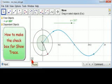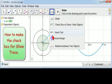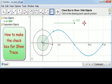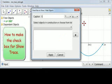Now let's see how to make that checkbox. What we want is a checkbox that turns the trace off and turns the trace back on. So we go to checkbox and we put a checkbox up here, and we'll call it show trace.